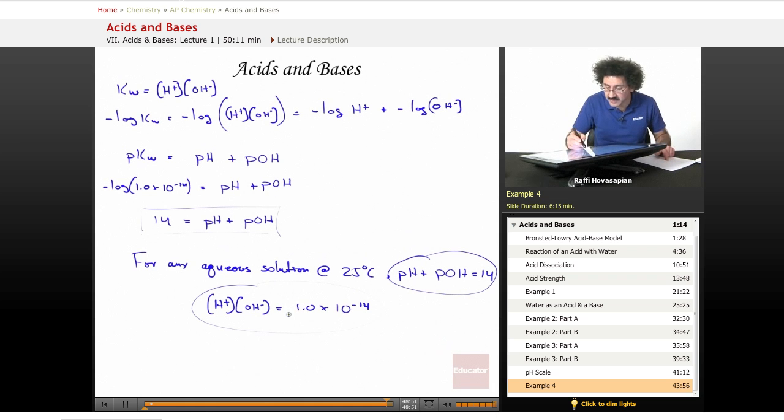These are the same thing, except one deals with these scientific notation numbers, the small ones, one deals with numbers that are a little bit more tractable. So, in any aqueous solution, the product of the hydrogen ion hydroxide concentration is 10 to the negative 14. The pH plus the pOH of that solution is equal to 14.